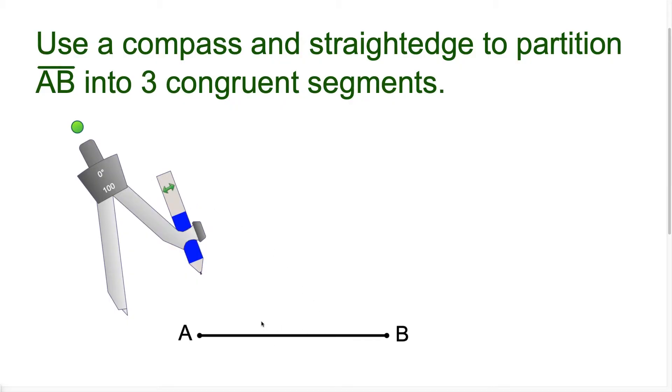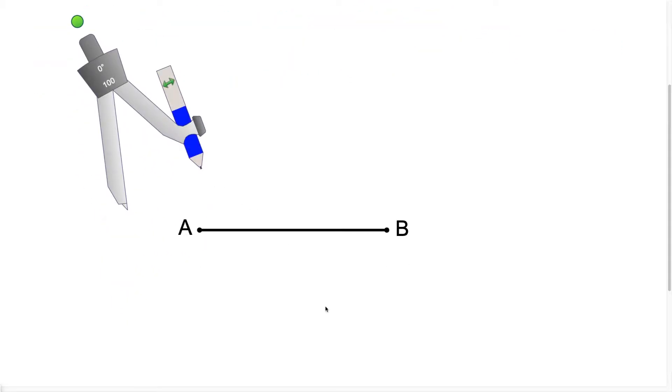So what we want to do to cut this into three equal pieces is we're going to set a straightedge on point A and we're going to draw a line so that this line segment here goes past point B.